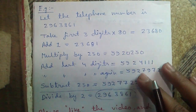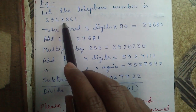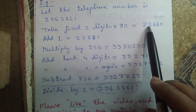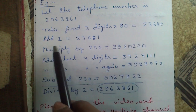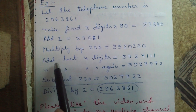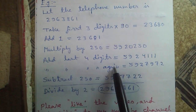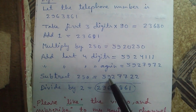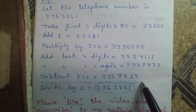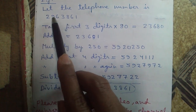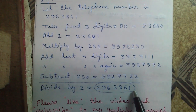For example, let the telephone number be 2963861. Take first three digits 296, multiply by 80: 23680. Add 1: 23681. Multiply by 250: 5920250. Add last four digits 3861, then add 3861 again. Subtract 250 to get the result. Ask this from your partner, divide by 2 using a calculator, and you get the original telephone number: 2963861.